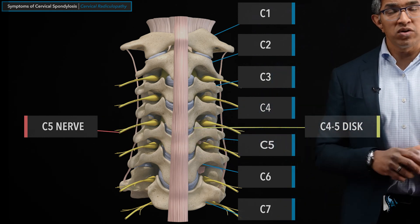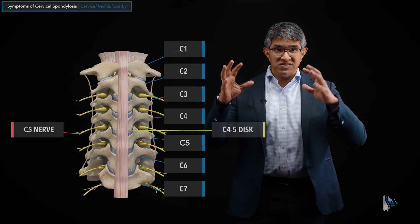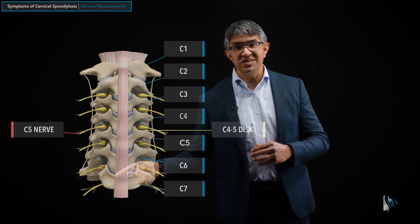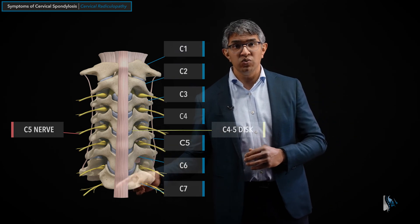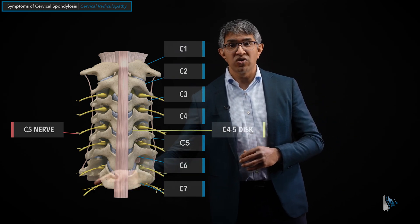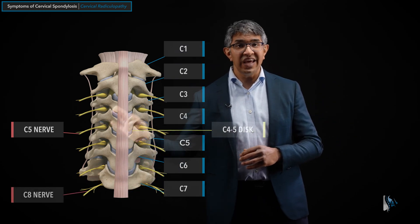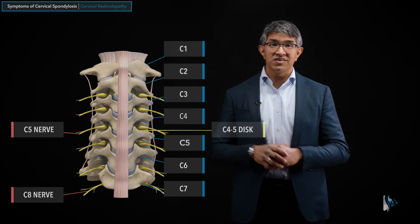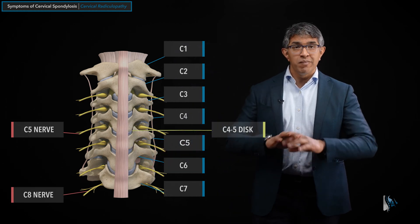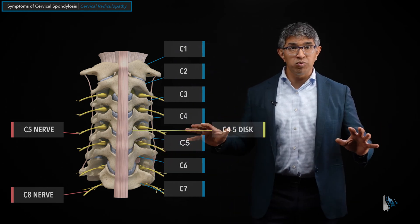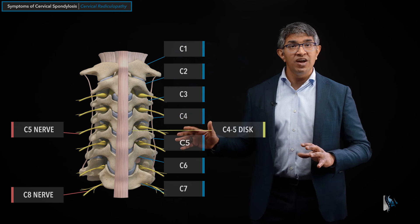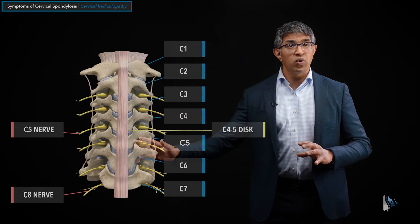An interesting artifact because of the way this is numbered: between C7 and T1 is a nerve called the C8 nerve. There's a right-sided C8 and a left-sided C8 nerve, but there is no vertebral body or other structure numbered C8 — only this one nerve.